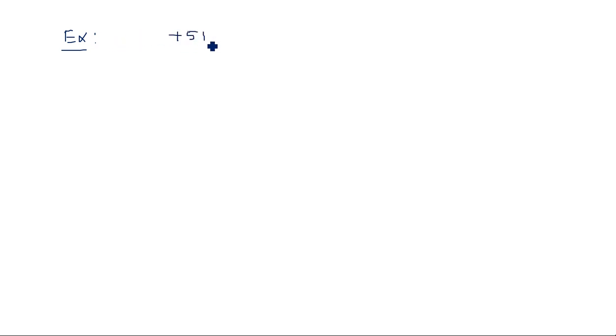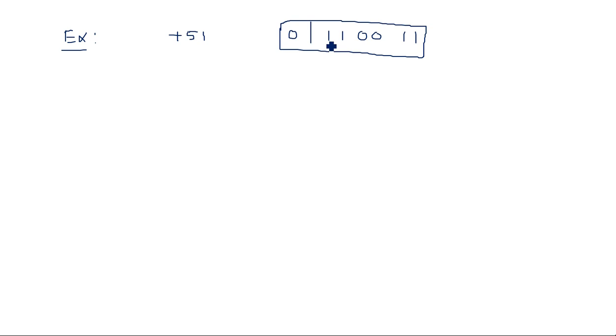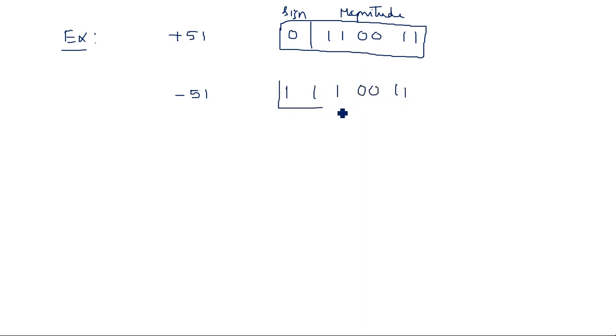For example, the number plus 51 in normal sign-magnitude representation has sign bit 0, and 51 in binary is 110011. So the representation is: sign 0, followed by magnitude 110011. For minus 51 in sign-magnitude form, the sign bit becomes 1 while the remaining magnitude stays as 110011.